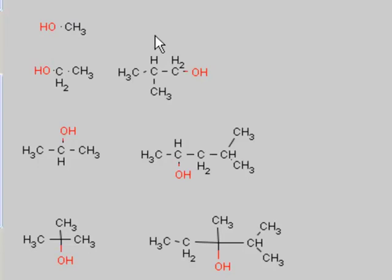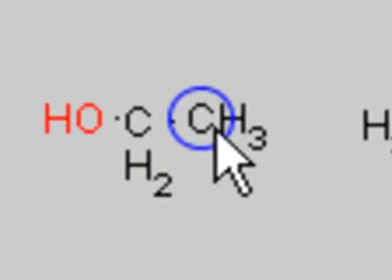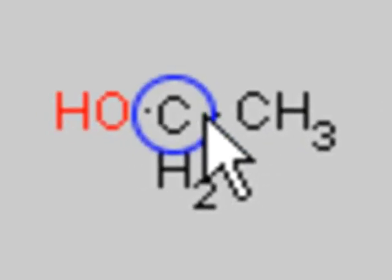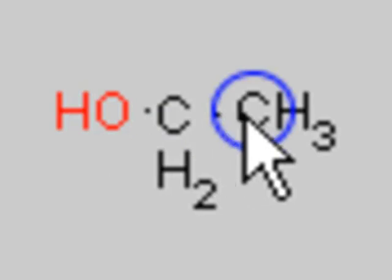To determine if an alcohol is primary, secondary, or tertiary, focus on the carbon bonded to the OH. If that carbon has one carbon singly bonded to it, it's a primary alcohol. Here's the carbon bonded to the OH — it has one carbon singly bonded to it — therefore it is a primary.